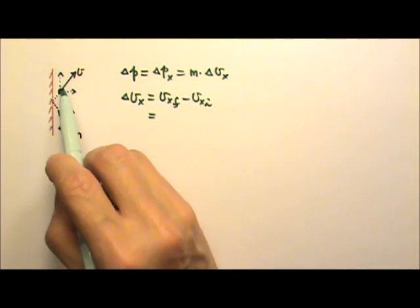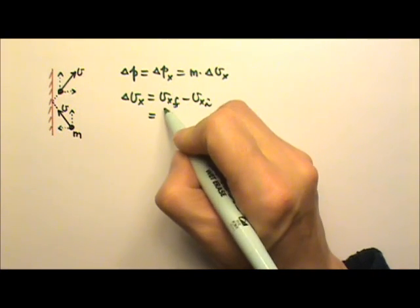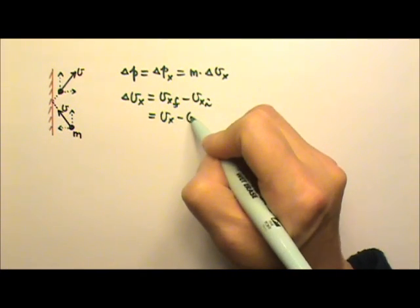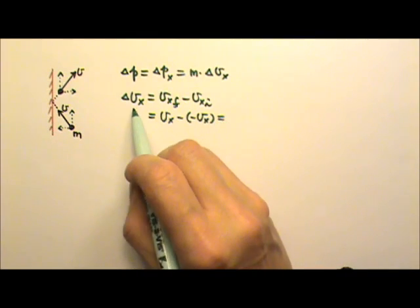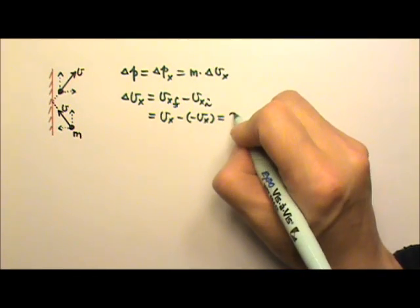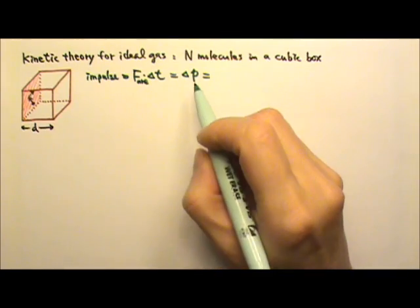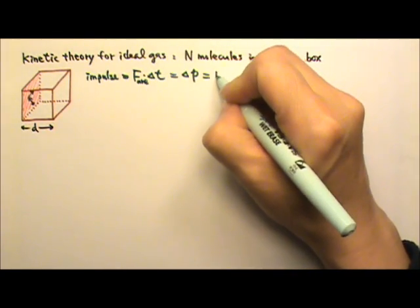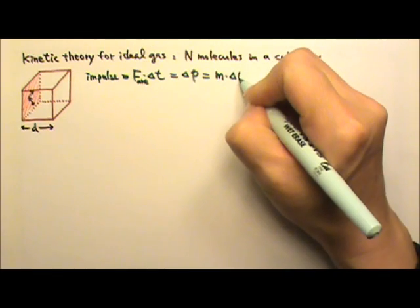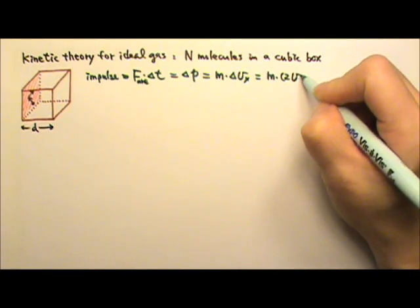then we can say the final velocity is vx and the initial is negative vx. So the final is vx, the initial is negative vx, so the changing velocity's x component would be twice vx. Therefore the changing momentum of the molecule equals m times delta vx, which is m times 2vx.